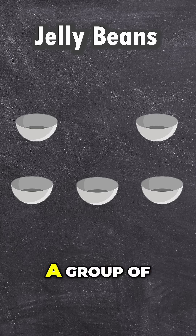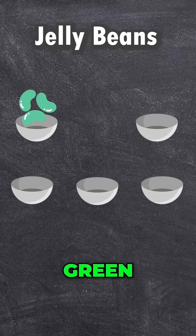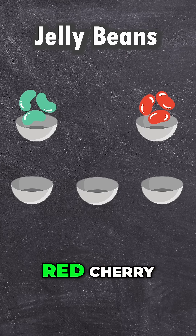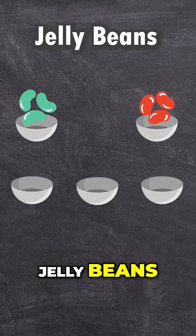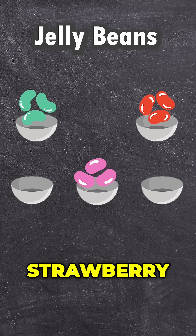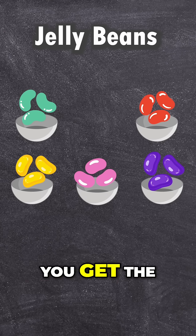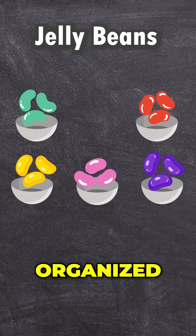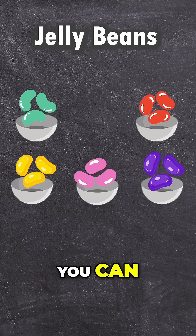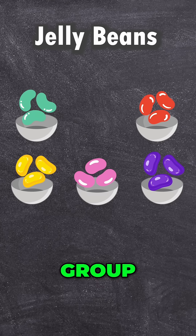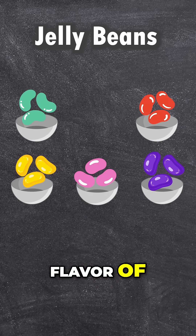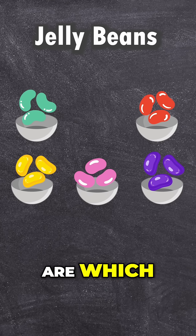So now you have a group of green apple jelly beans, red cherry jelly beans, pink strawberry jelly beans — you get the idea. Now it's organized and you can quickly identify which group, which flavor of jelly beans are which.